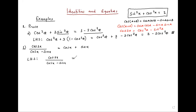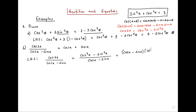So cos 2x is the same as cos squared x minus sine squared x, all over cos x minus sine x. The good news is that the numerator is a difference of two squares, so you can use that fact: (cos x minus sine x)(cos x plus sine x) divided by (cos x minus sine x). So this piece and this piece cancel, and we get cos x plus sine x.